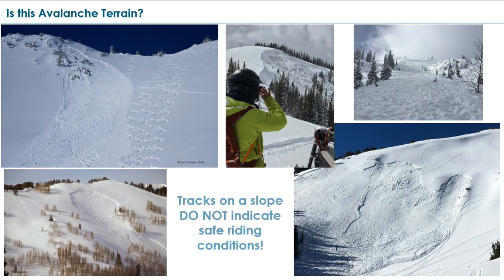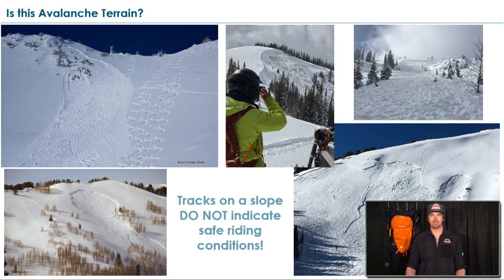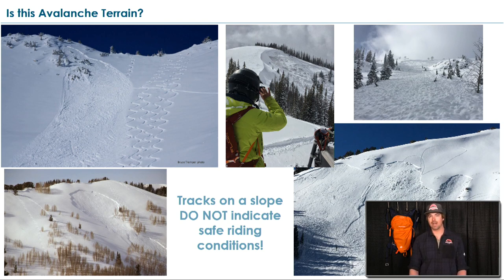Furthermore, when we're looking at a slope, just because it has tracks on it does not mean that it's safe, especially when we have a persistent weak layer problem. All of these avalanches you see here on this slide have tracks previously on the slope, and it took just the right amount of weight in the right spot on that slope to trigger an avalanche. Tracks do not indicate safety.